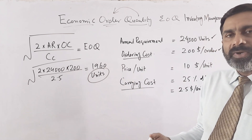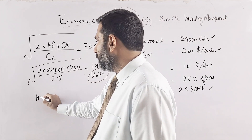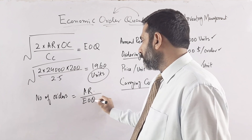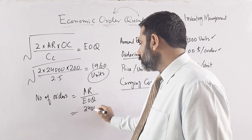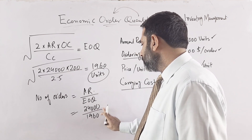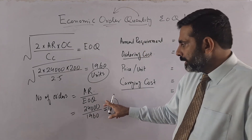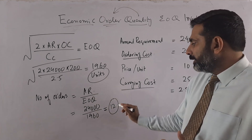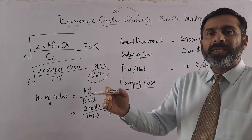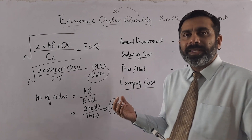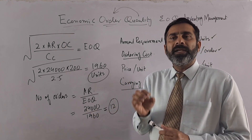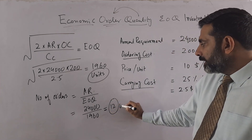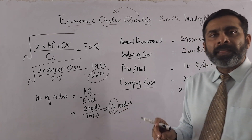The next thing to calculate is the number of orders. Number of orders = annual requirement divided by EOQ = 24,000 divided by 1,960, which gives approximately 12. We cannot write decimals here because you can only place one order or two orders — not 1.23 orders. So the company has to give 12 orders.